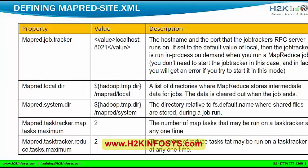In mapred-site.xml, the JobTracker connects to port 8021 by default. The property mapred.local.directory specifies where MapReduce stores intermediate data — mapper outputs are stored in the local file system, not HDFS, since we only need the final output. The property mapred.tasktracker.mapTasks.maximum tells how many MapTasks can run on a TaskTracker at a single point of time, with a default value of 2. Similarly, the ReduceTasks maximum defaults to 2.